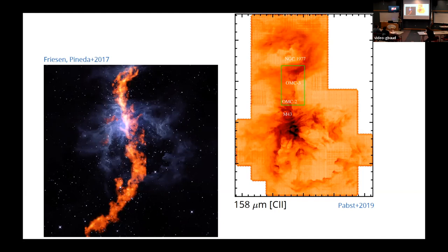The problem, of course, is that we don't have at the moment any, well, it's not clear. It's hard to observe this line in general, particularly in the local ISM.